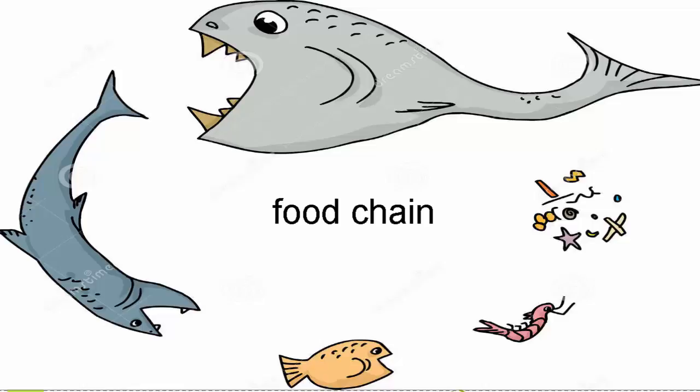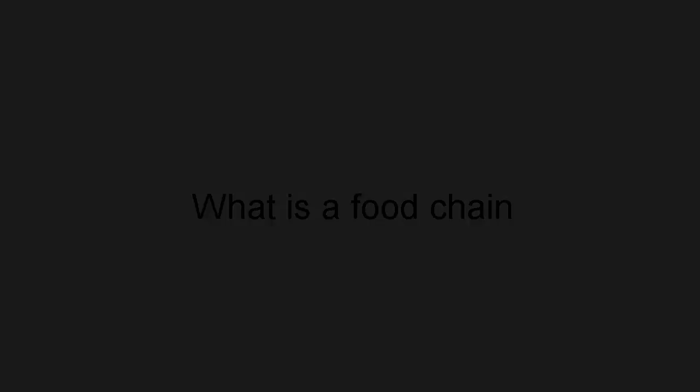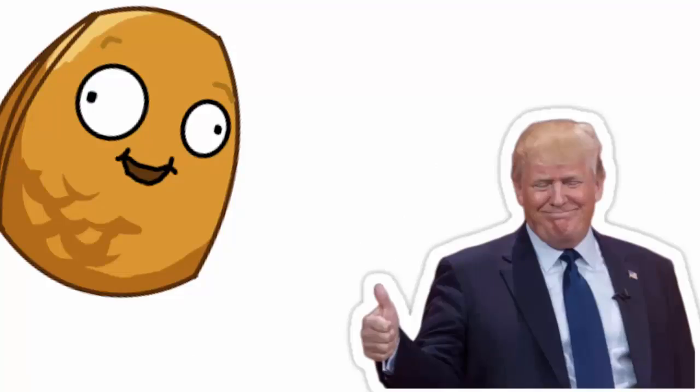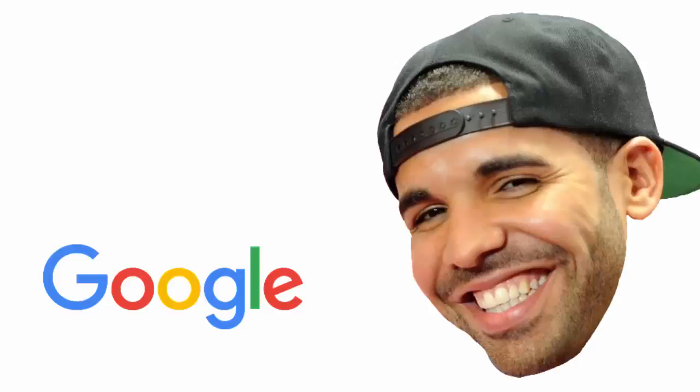First I will talk about food chains. A food chain is a series of organisms each dependent on the next as a source of food. And that was the definition for food chains — and I didn't just copy and paste it from Google, hee hee.